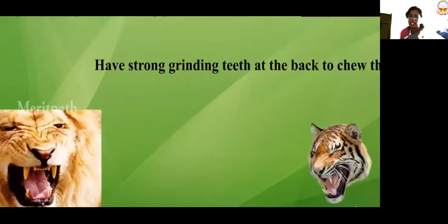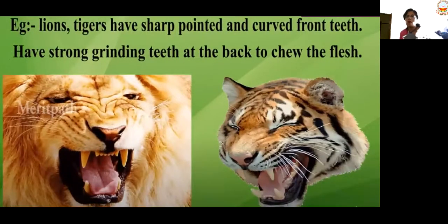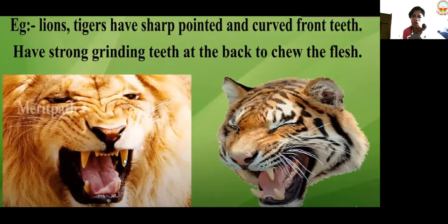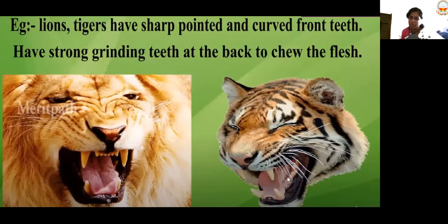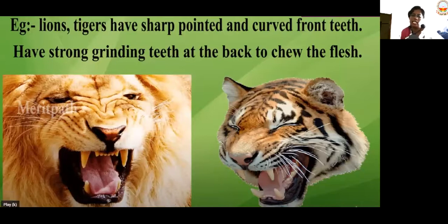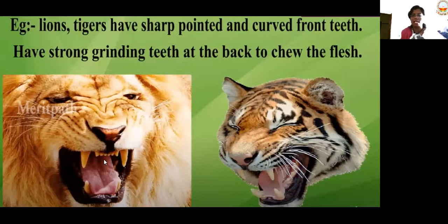For example, lions and tigers have sharp, pointed, and curved front teeth — you can see how the lion's teeth are. They have strong, pointed, and curved front teeth, and strong grinding teeth at the back to chew their flesh. Whatever flesh they have caught, they eat it, chew it, and swallow it. That's why the teeth are very strong for tigers and lions — once they catch their prey, nobody can move away.